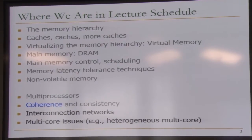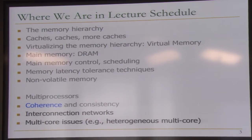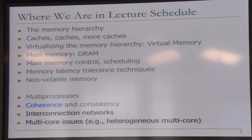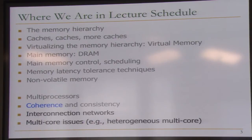We also saw techniques like source throttling and mapping data to different channels to reduce interference. Can we take some of these techniques and provide a substrate such that you can guarantee slowdowns for different applications? You're running five different applications together — can you say I don't want these to be slowed down by more than 2x? She'll talk about how you can achieve this. This is an important problem because nobody wants stuff to slow down; you want some applications to get guaranteed service.